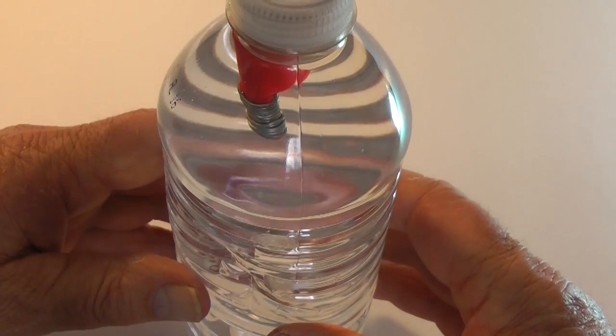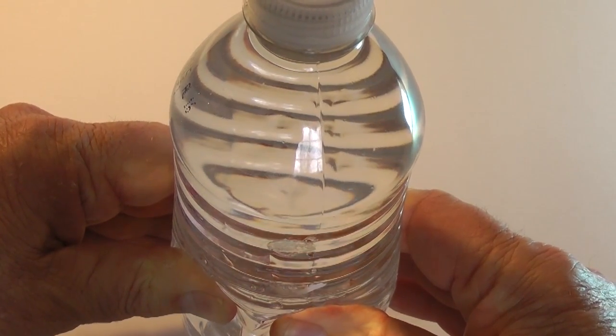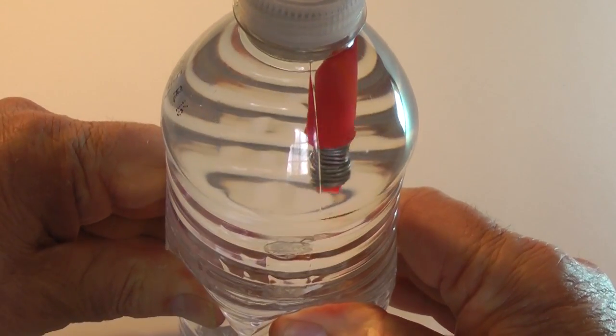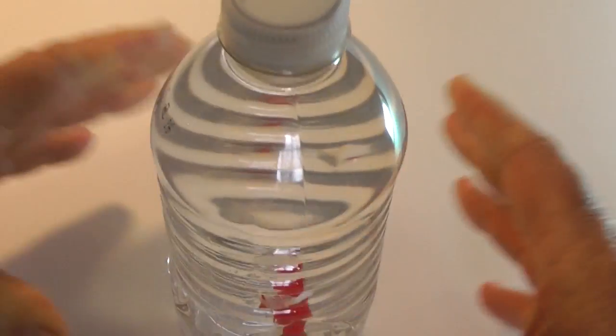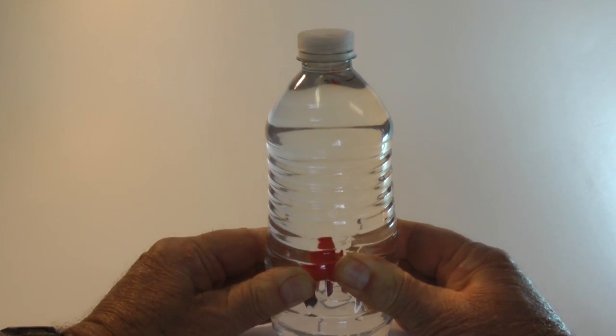With the bottle sitting vertical, squeeze and the diver will sink. Release and the diver will float back to the top. If you are demonstrating this in a classroom, you may want to stop at this point and ask for some opinions on how this works.